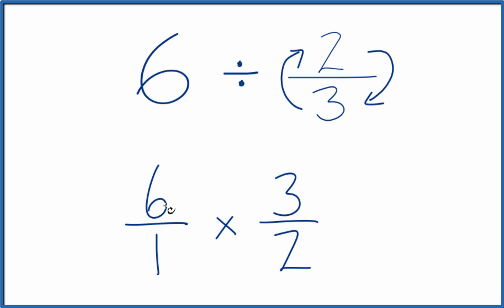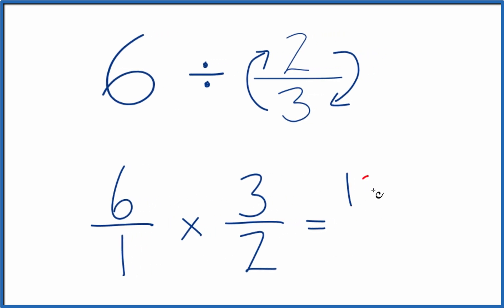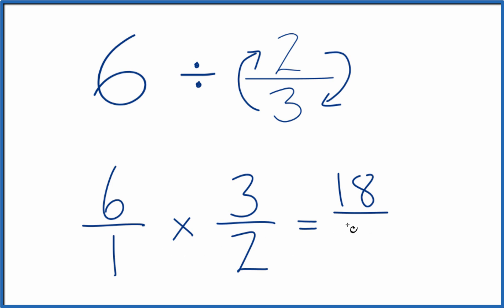So 6 over 1 times 3 over 2. When we're multiplying fractions, we multiply the numerator and then the denominator. 6 times 3, that's 18. 1 times 2 is 2.